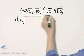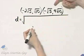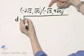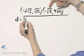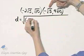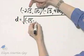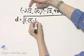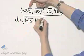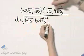The distance is the square root of — starting with the x values — negative square root of 5, minus negative 2 square root of 5, and that quantity is squared.